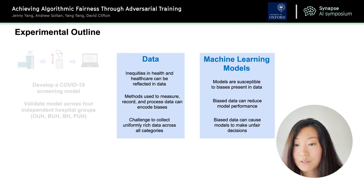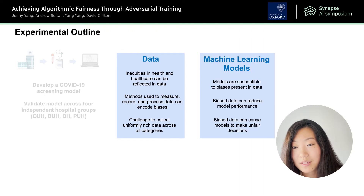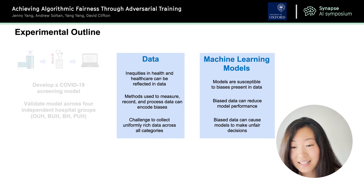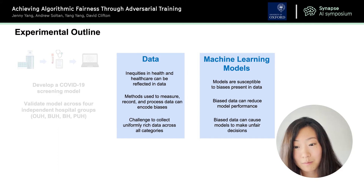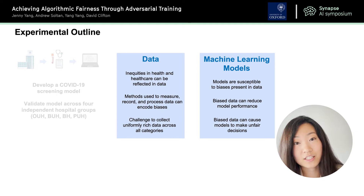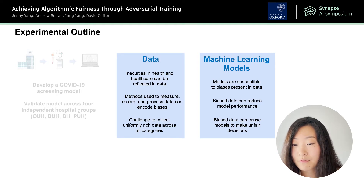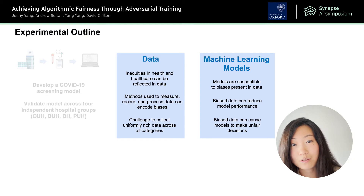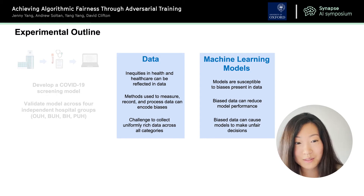With respect to machine learning models, these models are susceptible to the biases present in data. Biased data can reduce model performance and it can also cause models to make unfair decisions. Here by unfair decision we refer to any outcome that is skewed towards particular demographic groups.